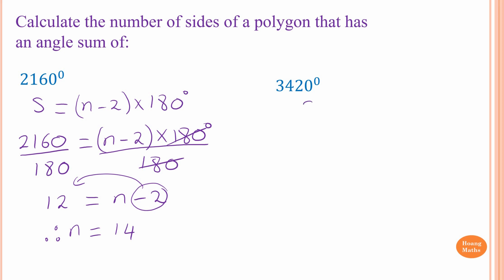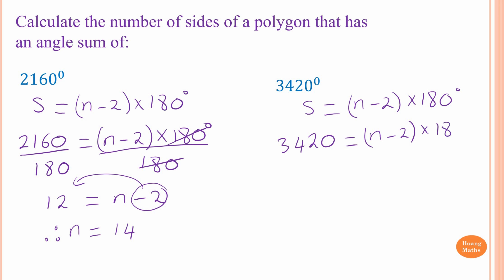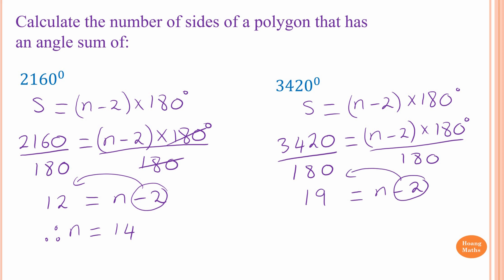Second one: the rule is S = (n − 2) × 180 degrees. The sum is 3420 degrees, so 3420 = (n − 2) × 180. Dividing both sides by 180 gives 19 = n − 2. Moving the 2 across gives n = 19 + 2 = 21. Therefore n equals 21. Thank you so much for watching.